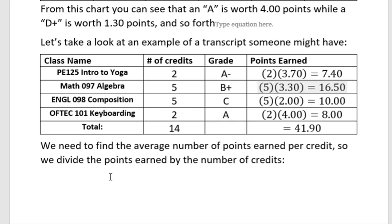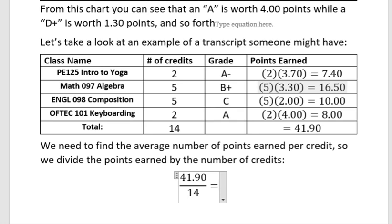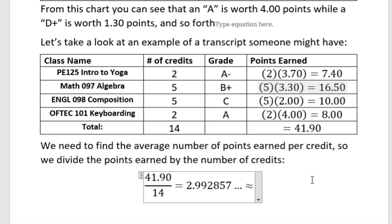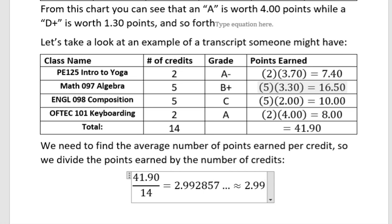We need to find the average number of points earned per credit, so we divide the points earned by the number of credits. We're going to take 41.90 and divide by 14 — taking the points earned divided by the credits attempted. We want to round to the hundredths place. On my calculator I got 2.99285... So when you see a grade point average, assume it may have been rounded. This gives us approximately 2.99, so this person would have an approximate GPA of 2.99 at the end of that quarter.